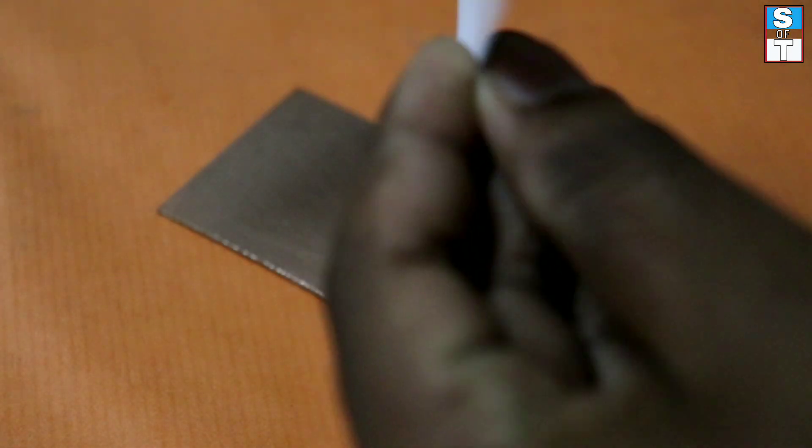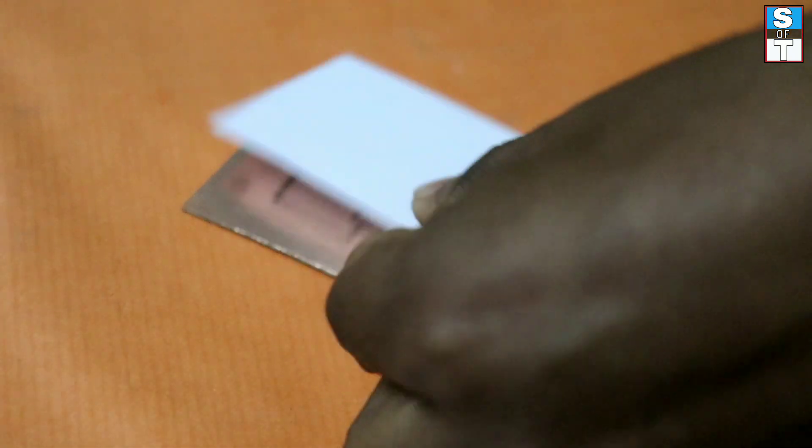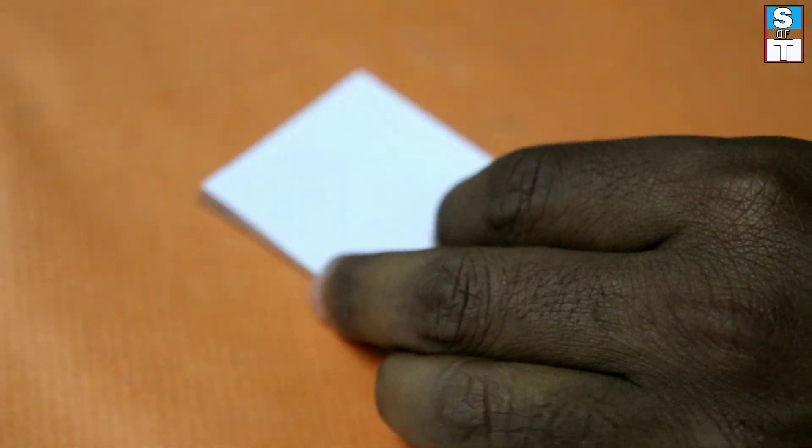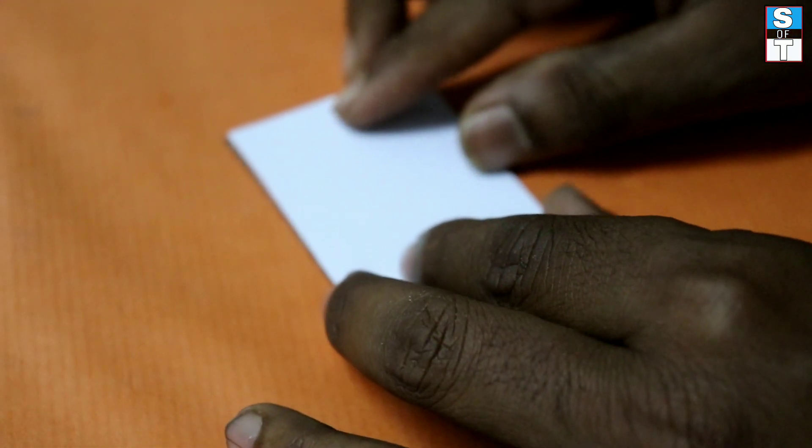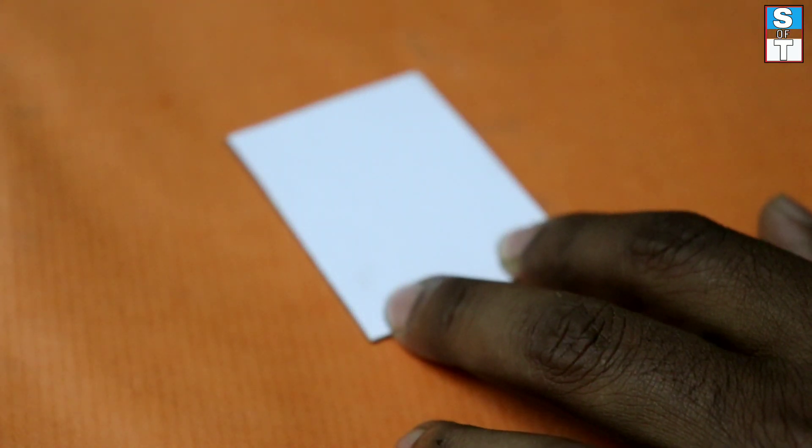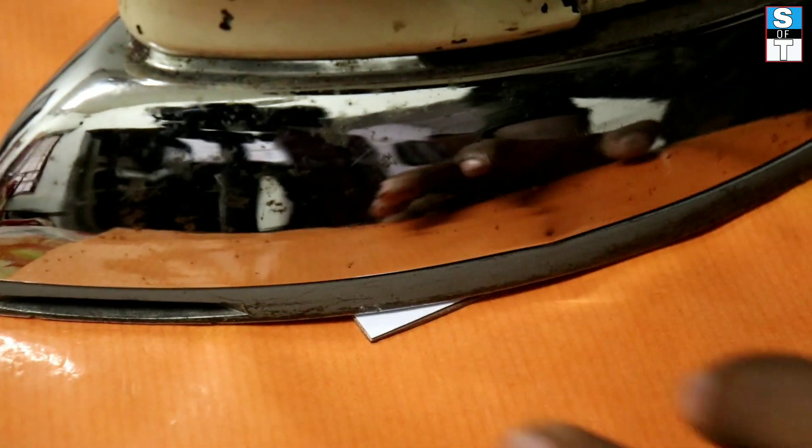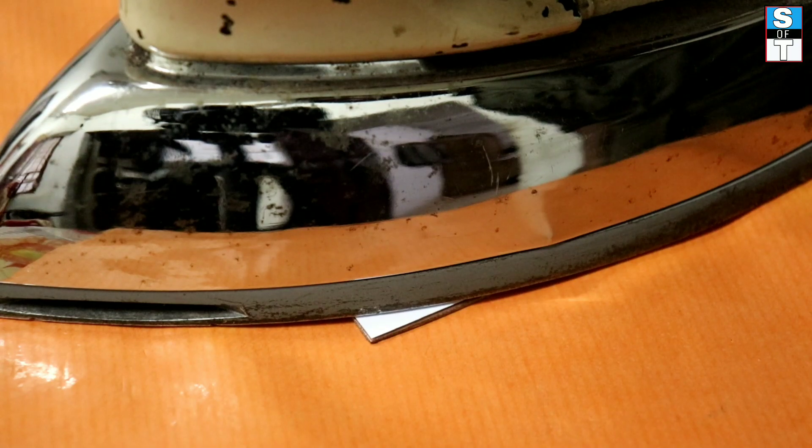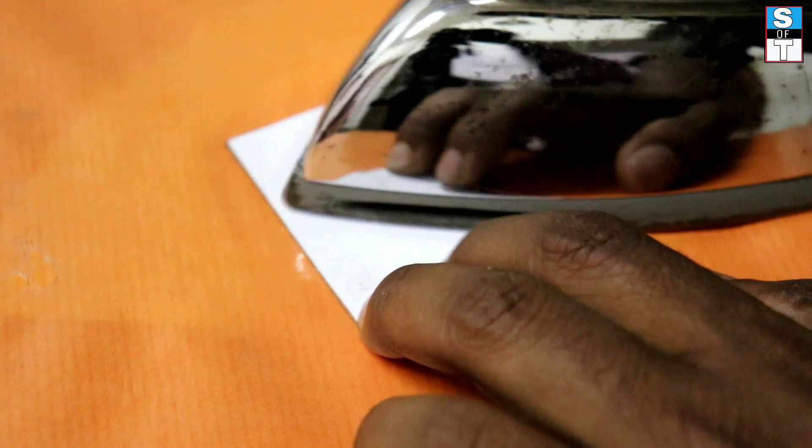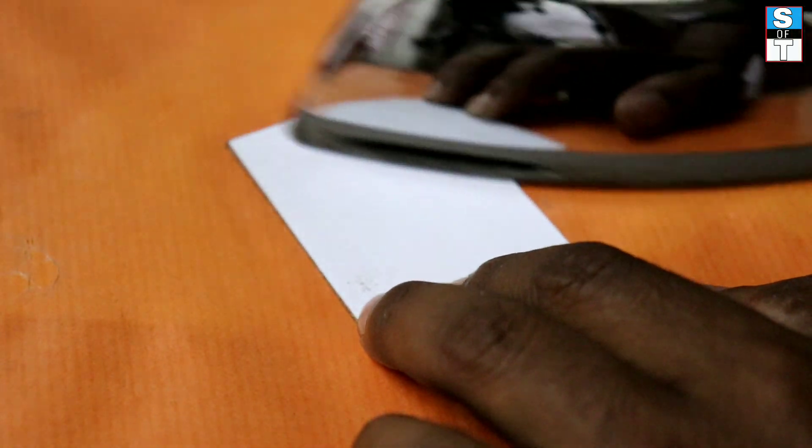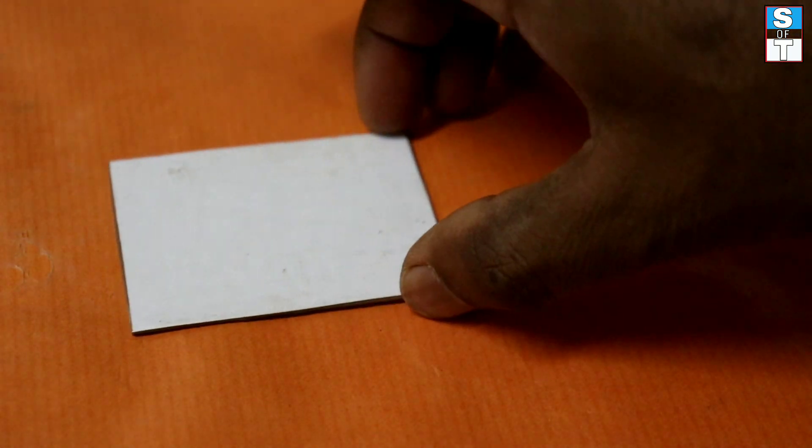Then we are going to apply the layout to the PCB. Place the layout on the PCB. By using heat, we are transferring the toner from glossy paper to the PCB. Do this procedure in high temperature conditions. Do this step very carefully because the copper plate is very hot.